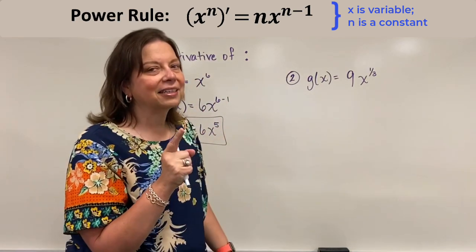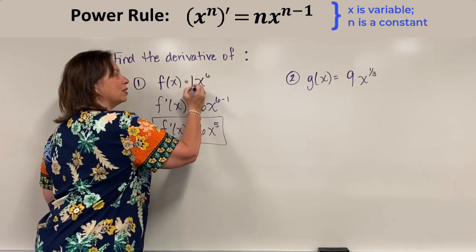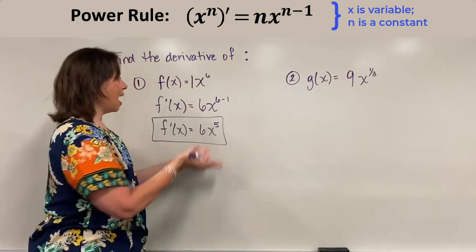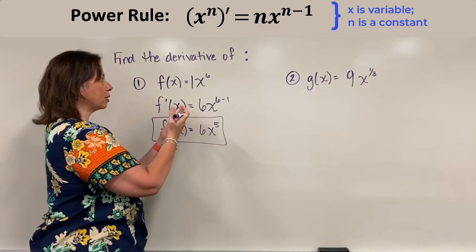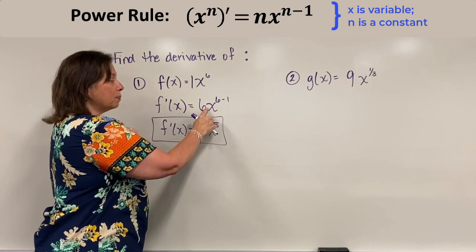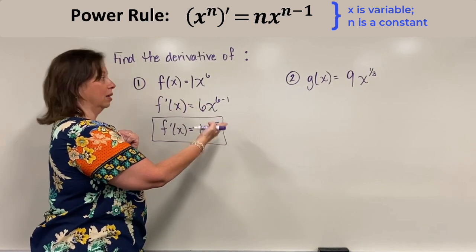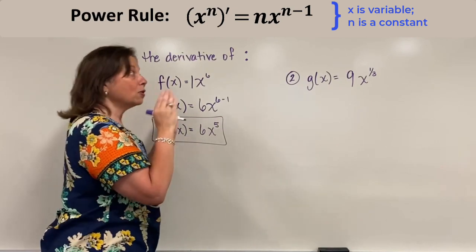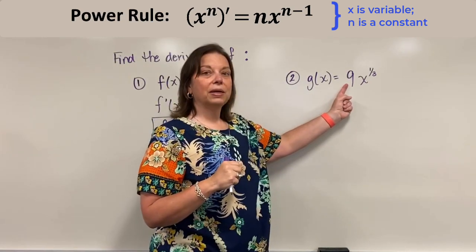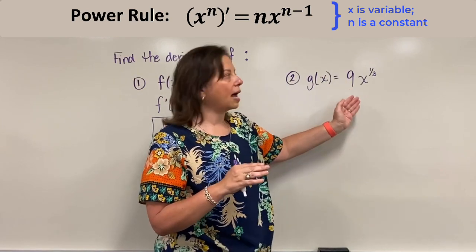We didn't have that in our last problem, although we technically did. Over in our last problem, we could have imagined there was a 1 in front of that x to the sixth, and we would have worked it the same way — we would have ended up essentially multiplying 6 times 1, which still gives us 6. So that's a little heads up that we're going to be multiplying over here by this current 9.